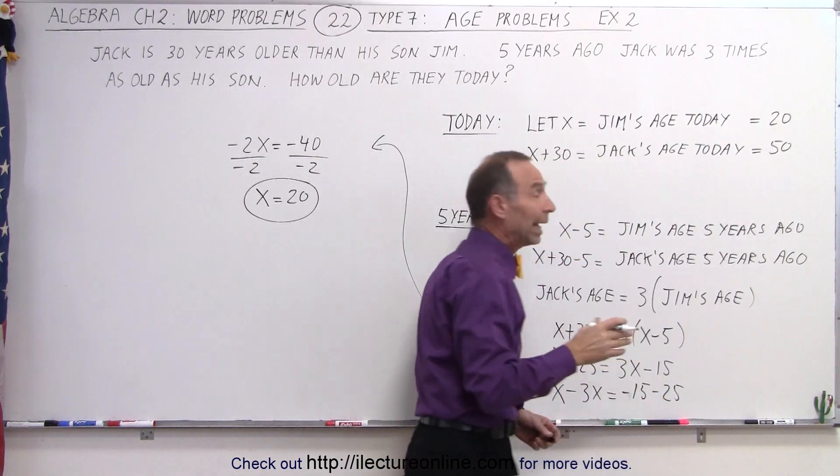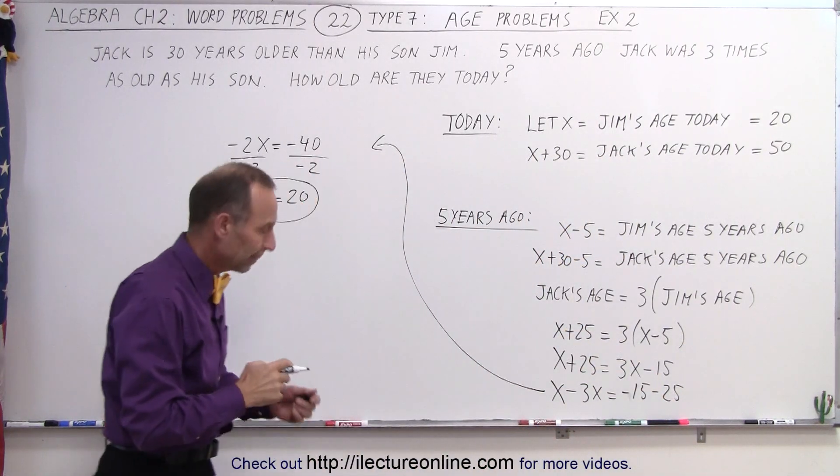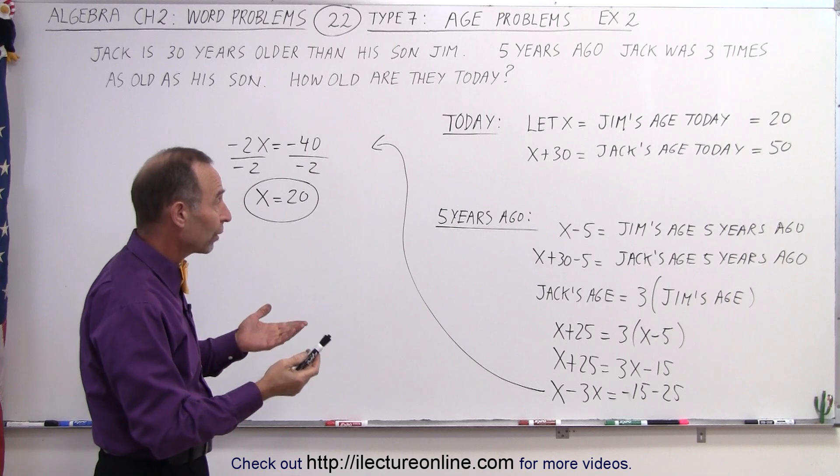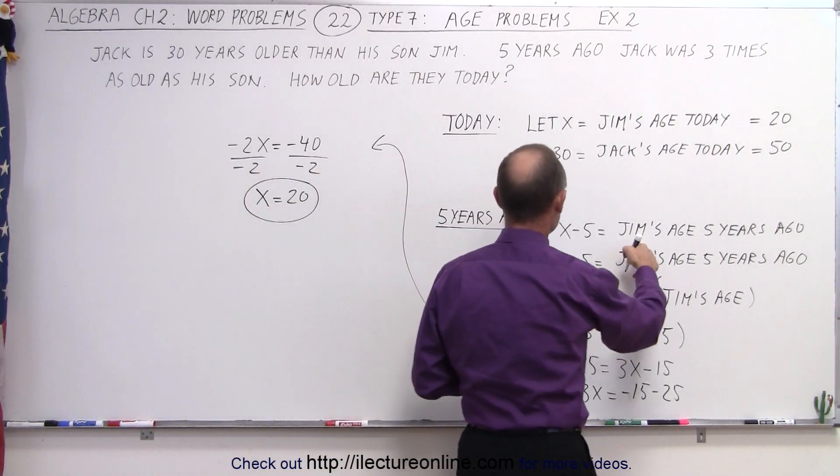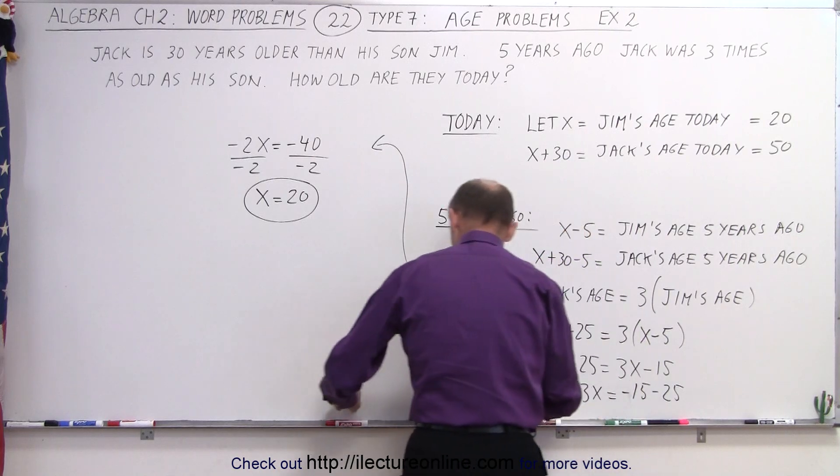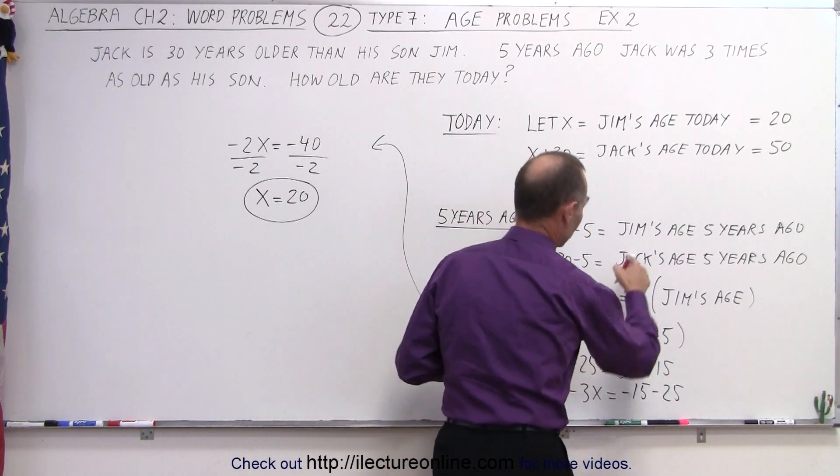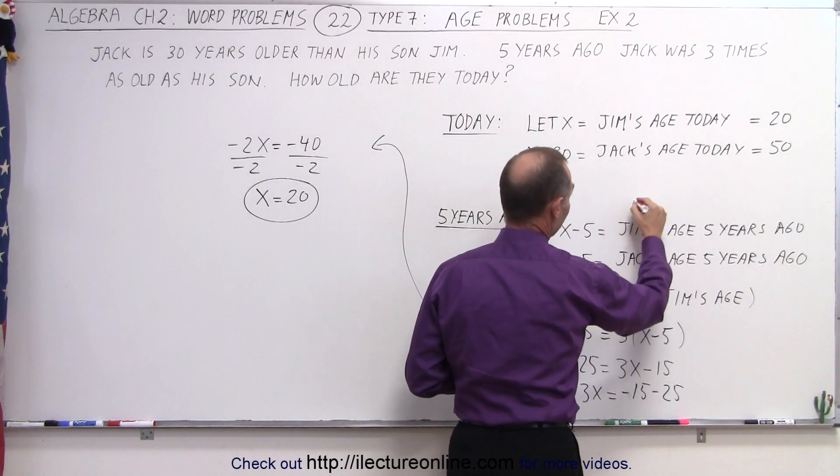So Jim is 20 today and Jack is 50 today. Now we can check to see if that matches what's going on five years ago. Five years ago Jim's age would be five years less so it would be 15.